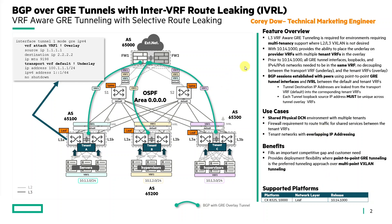This feature supports multi-tenancy in data center environments and provides capability for a provider network or transport VRF to be used in the underlay, with multiple tenant VRFs to be used in the overlay. Prior to 10.14-1000, all GRE interfaces, loopbacks, and IPv4/IPv6 networks needed to be included in the same VRF — and now that's no longer the case.